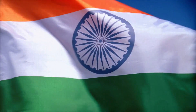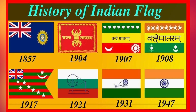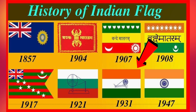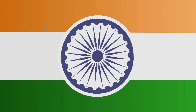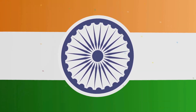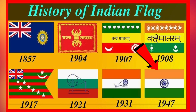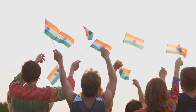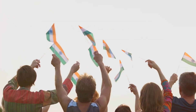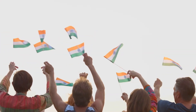Fast forward to 1931, the design was modified again, this time to include a spinning wheel in the center — the charkha — an emblem of economic independence. The final form of the flag as we know it today came to be in 1947, brought to life by the visionary Pingali Venkaya. The spinning wheel was replaced with the Ashoka Chakra, a 24-spoked wheel symbolizing the eternal wheel of law and righteousness. Each change, each modification, reflected the evolution of a nation, the aspirations and the dreams of its people.